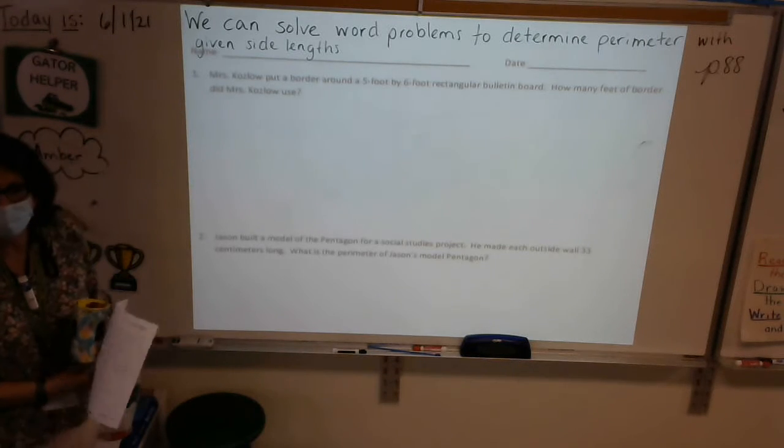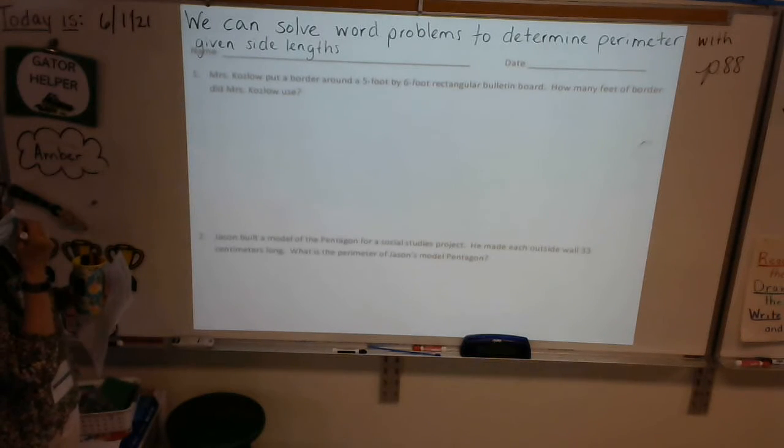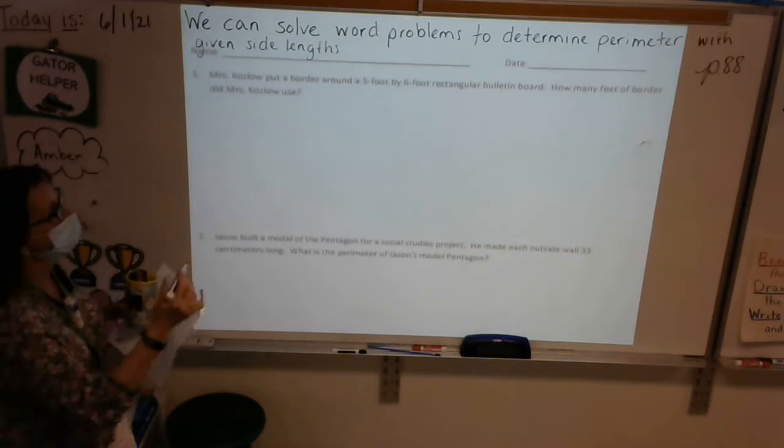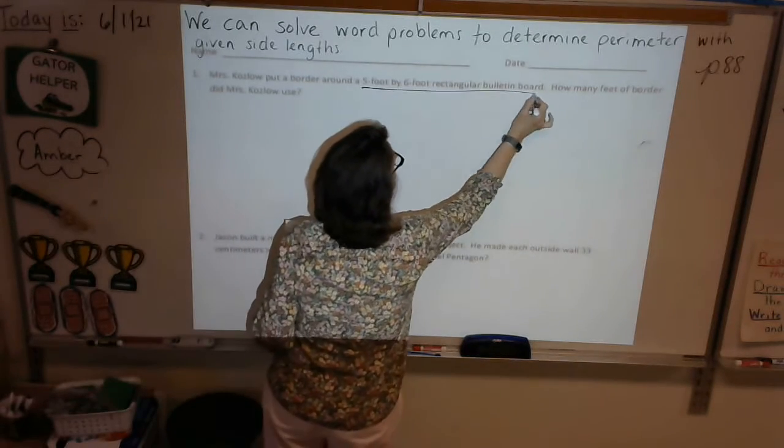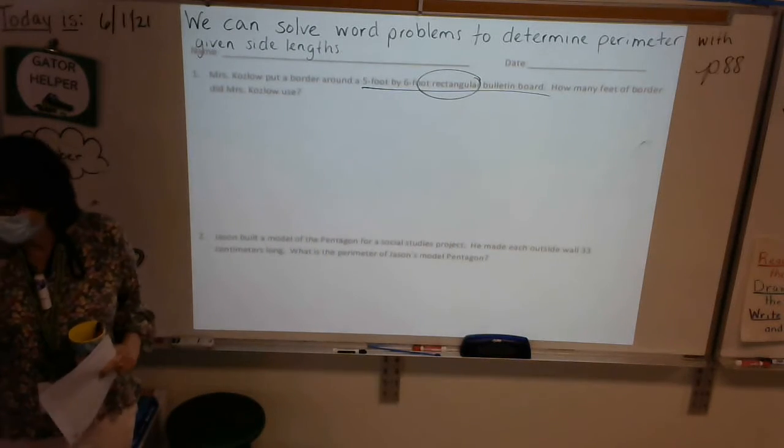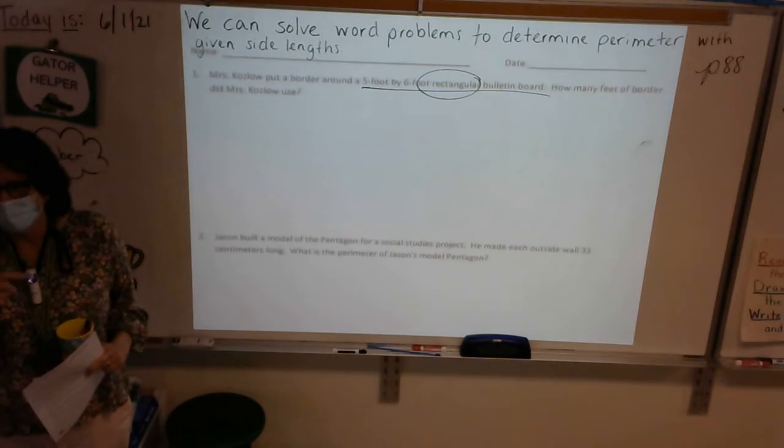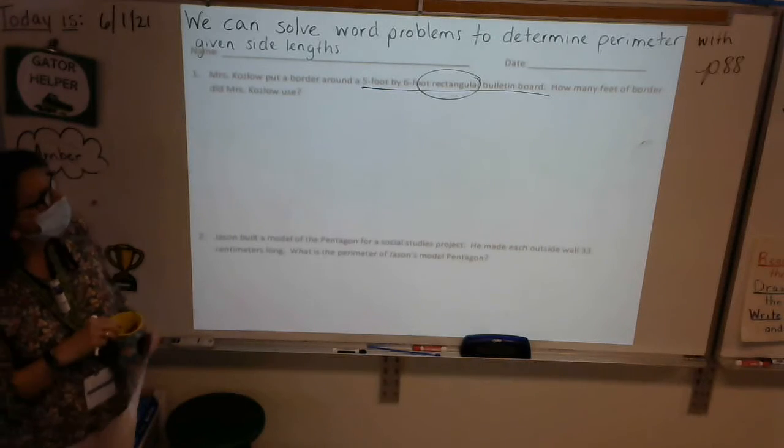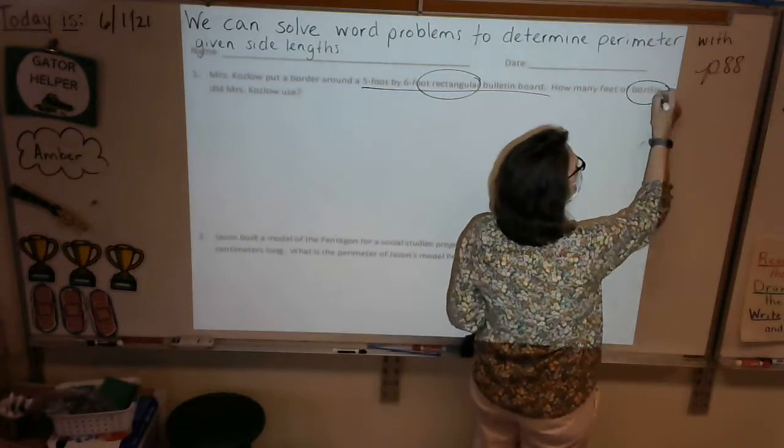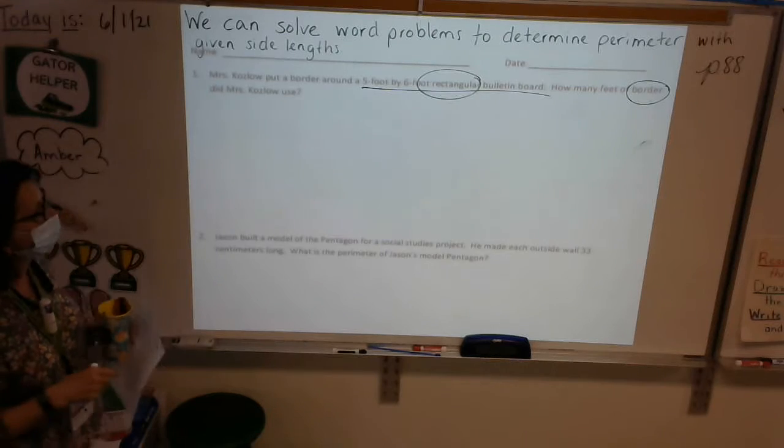And I think I'm going to pull sticks today, because I know a lot of you like to volunteer, but I want to make sure everybody gets a turn. So Val, what word in there helps us understand? 5 foot by 6 foot rectangular bulletin board? Well, that helps me decide what picture I'll draw. I know I need a 5 foot by 6 foot rectangular bulletin board, so I know it will be a rectangle, so go ahead and underline those. Circle rectangle. But how do we know we're looking for perimeter? Because it says how do we think of... Very good. There's that word. So let's go ahead and circle that. The word border, remember, indicates perimeter. The border, the outline, the boundary of the shape.